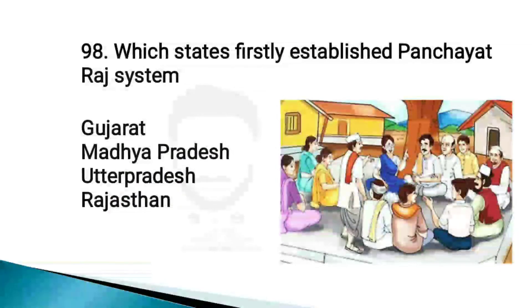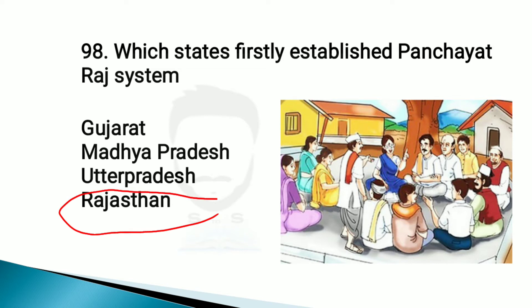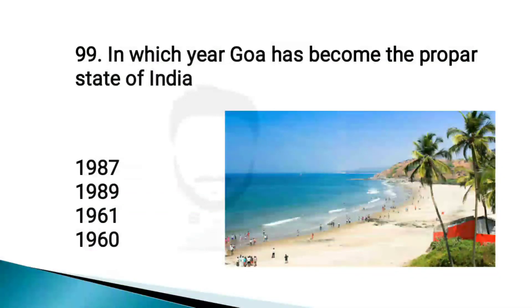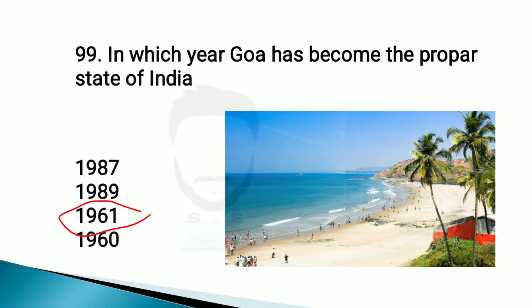Which state first established the Panchayati Raj system? Rajasthan. In which year did Goa become a proper state of India? 1961.